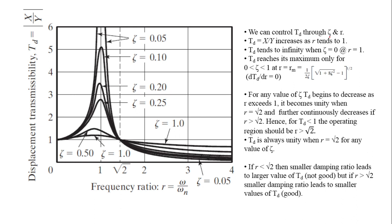The displacement transmissibility can be controlled by changing the values of zeta and r. The displacement transmissibility increases as r tends to 1 — you can see that these curves tend to increase when r increases from 0 and approaches the value of 1, that is, near resonance.